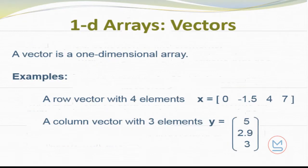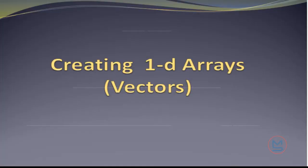We'll start off with one-dimensional arrays. A one-dimensional array is also called a vector, and some of you, depending on what you took in high school or in previous classes, may have heard of vectors. A couple of examples: a row vector would just be a row of numbers, a column vector would just be a column of numbers.